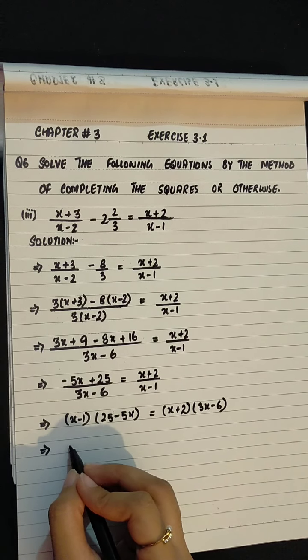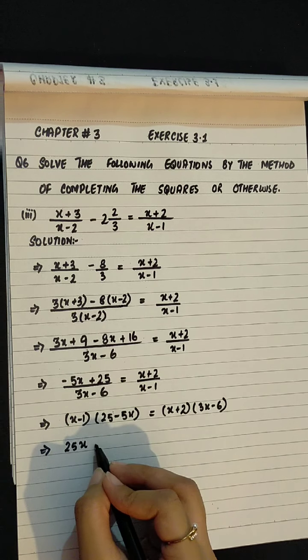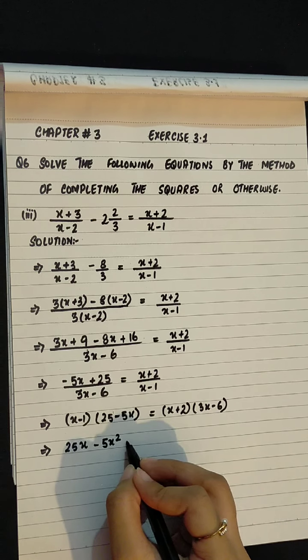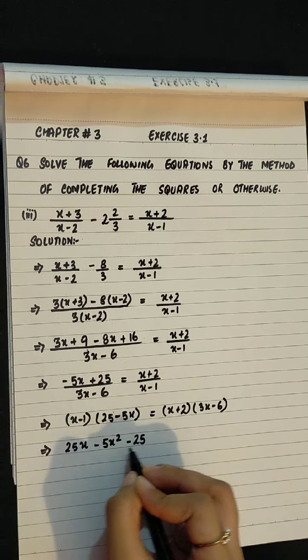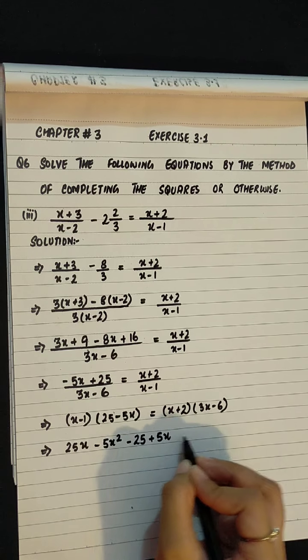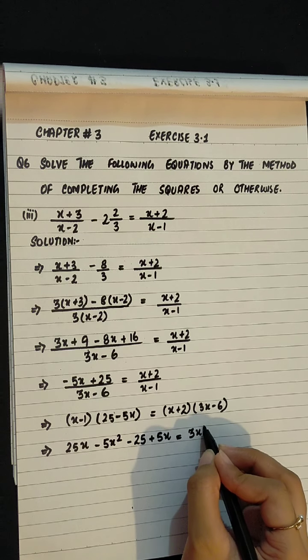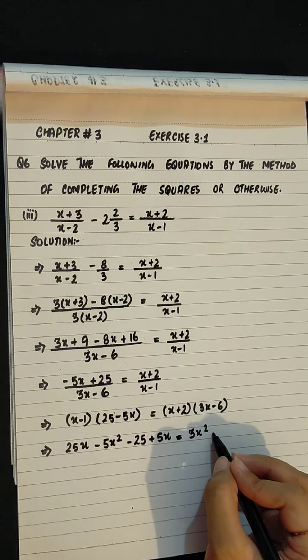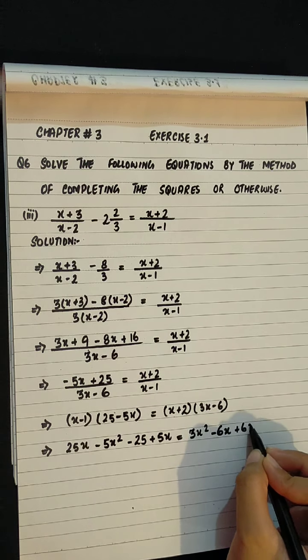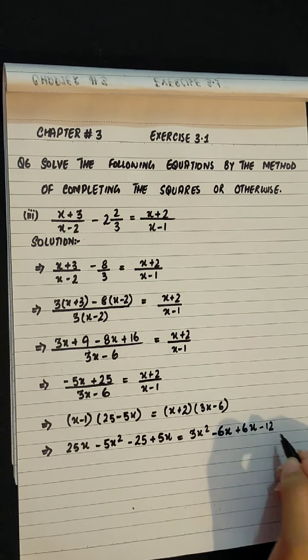Bracket open. x into 25, 25x. x into minus 5x, minus 5x square. Minus 1 into 25, minus 25. Minus 1 into minus 5x, plus 5x equals to x into 3x, 3x square. x into minus 6, minus 6x plus 2 into 3x, plus 6x. 2 into minus 6, minus 12.